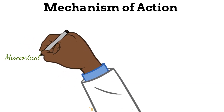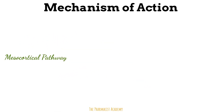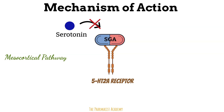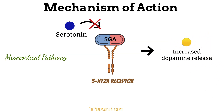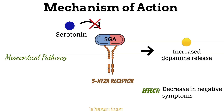In the mesocortical pathway, second generation antipsychotics block serotonin receptors — specifically the 5-HT2A receptor — which plays a crucial role in treating negative symptoms. This action indirectly enhances the release of dopamine within the mesocortical pathway, which is implicated in cognition and emotion regulation. By blocking the 5-HT2A receptors, second generation antipsychotics indirectly improve dopamine signaling in this area, potentially reducing the negative symptoms.